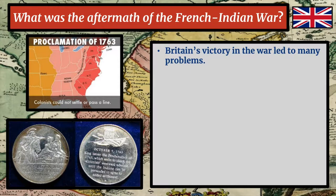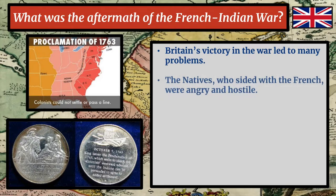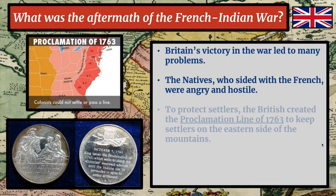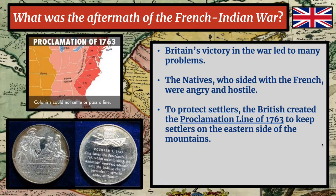Britain's victory in the war actually created many problems that could not be foreseen ahead of time. The natives who sided with the French were extremely angry and hostile. The French had treated them with respect, and they had very difficult relations with the British. To say they were not exactly welcoming towards British settlers moving west across the mountains would be an understatement. So to protect settlers, the British actually created the Proclamation Line of 1763, which said settlers had to stay on the eastern side of the mountains.